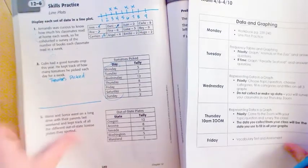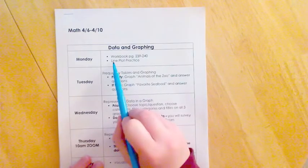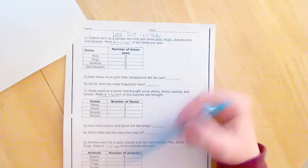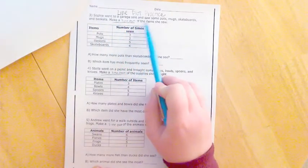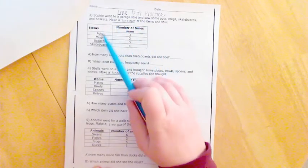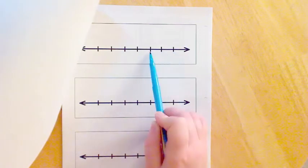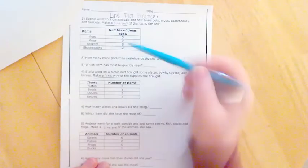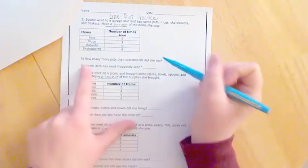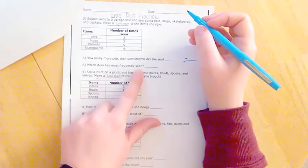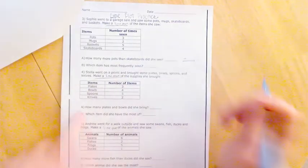If you finish that and you would still like some extra practice or have a little bit of extra time, in your packet the next thing says line plot practice. There are three sets of data here where you are going to plot, and I already drew the lines there for you. Sophie went to a garage sale and saw some pots, mugs, skateboards, and baskets. Make a line plot of the items she saw. There are extra lines - you don't need those ones, but use as many as you need X's for as many as they were seen. Then it has extra questions: how many more pots than skateboards did she see? Remember that's a subtraction problem. Which item had the most frequency seen, which just means which one was seen the most? Good luck.